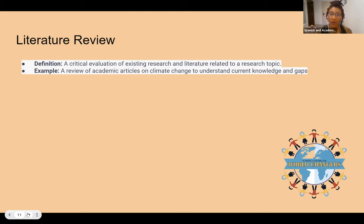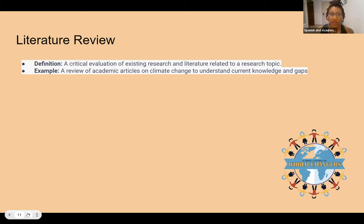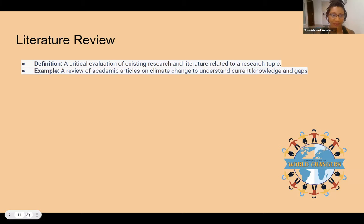A literature review is a critical evaluation of existing research and literature related to the research topic. This step happens after you've formed a question, but before you conduct your null hypothesis. You need to check what existing literature already covers your topic — you cannot start a new study by addressing something someone has already addressed; that would be plagiarizing. Your question might change once you see the existing literature, or you might find that information exists for one state but not another. An example would be reviewing academic articles on climate change to understand current knowledge and gaps.